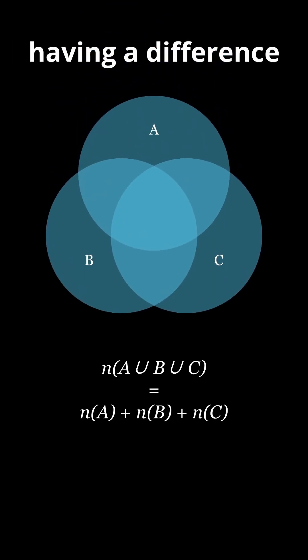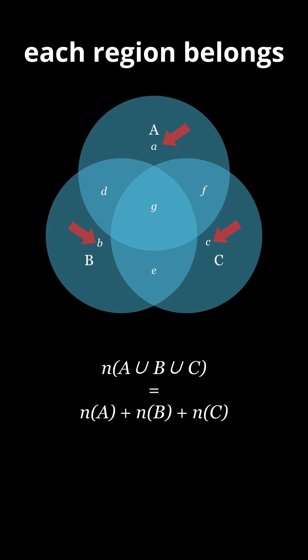Let's label the regions having a difference in overlap. Regions A, B, and C have no overlap since each region belongs to only one set. Regions D, E, and F are counted twice. This is because each region is common to two sets. Finally, region G is counted thrice as it is common to all sets.